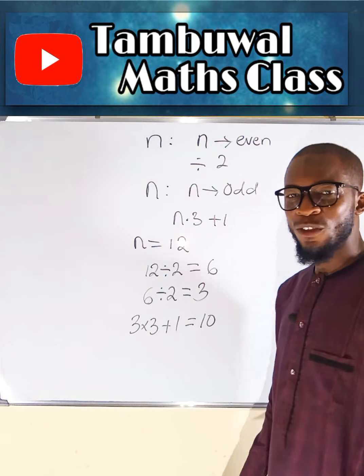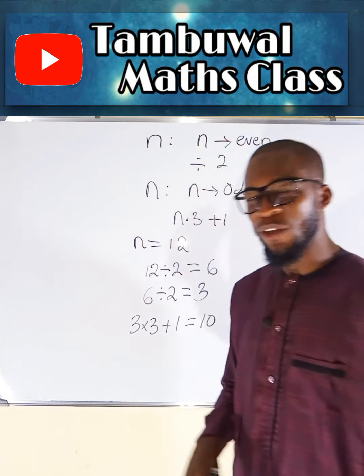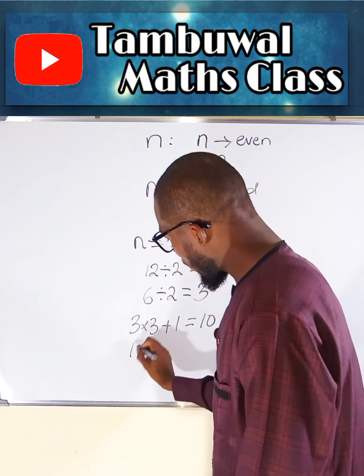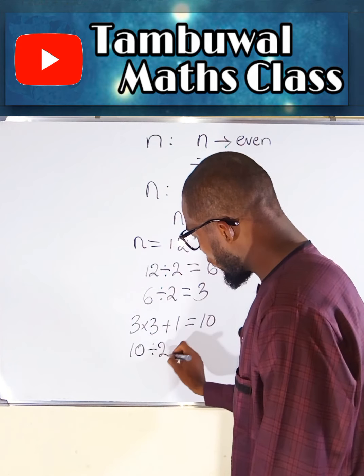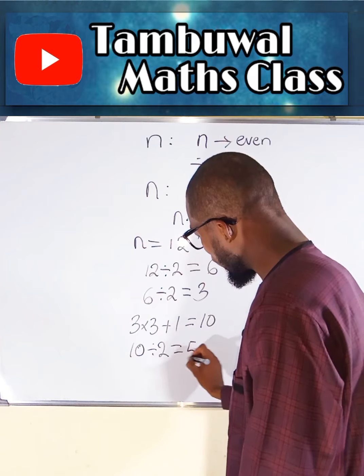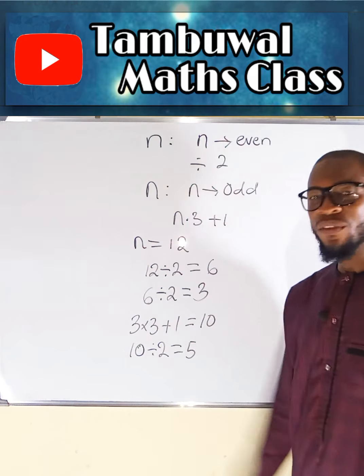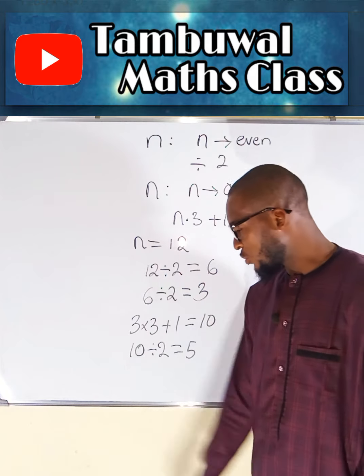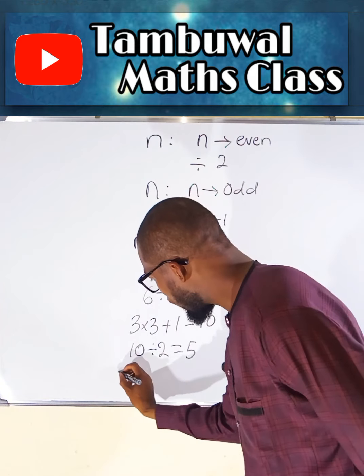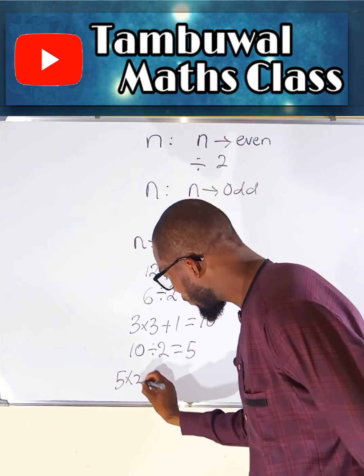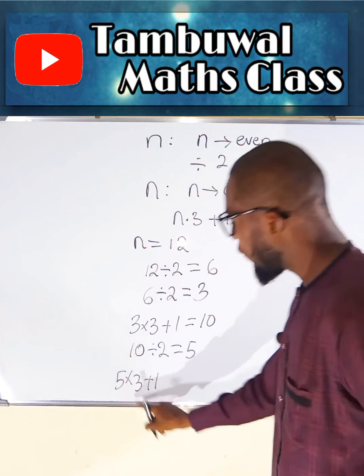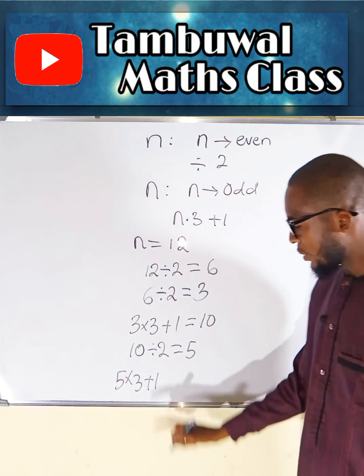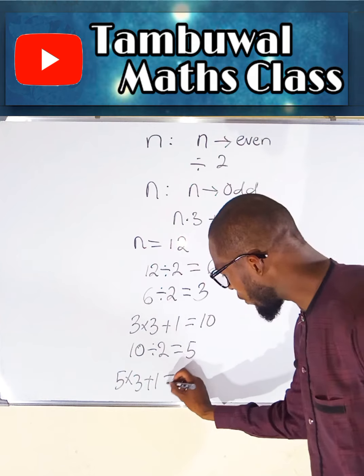10 is an even number. So we are going to take this 10 and divide it by 2. So 10 divided by 2 will give us 5. 5 is an odd number. So we multiply it by 3 and add 1 to the result. So we say 5 multiplied by 3 plus 1. 5 multiplied by 3 is 15. Then 15 plus 1 is 16.